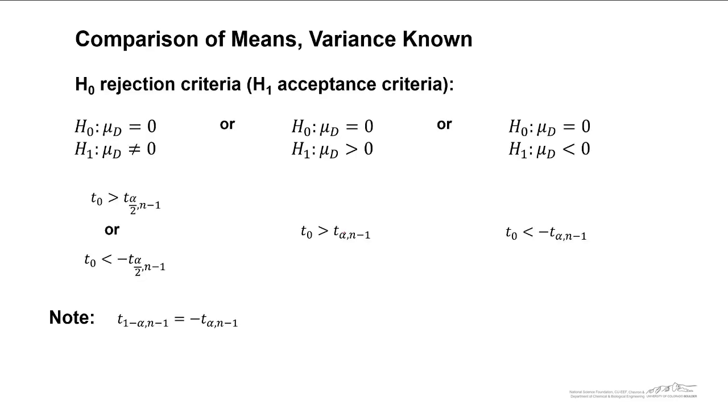We have the same type of rejection criteria that we have considered with all of these t-tests. For a two tailed test, our test statistic has to be greater than t alpha over 2 with n minus 1 degrees of freedom, or less than negative t alpha over 2 with n minus 1 degrees of freedom. For an upper tailed test, in order for us to accept the alternate and reject the null, our test statistic has to be up in the tails greater than t alpha with n minus 1 degrees of freedom. And similarly, for a lower tailed test, our test statistic has to be way down in the left tail, less than negative t alpha with n minus 1 degrees of freedom in order for us to accept the alternate hypothesis.